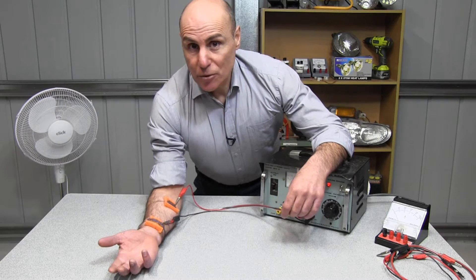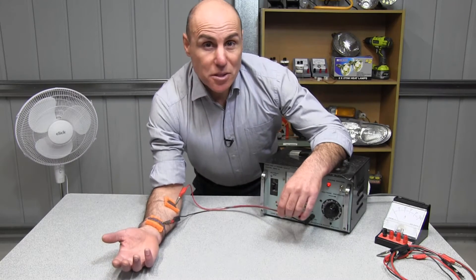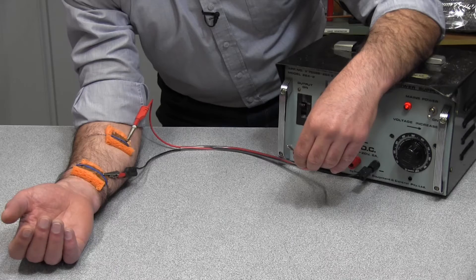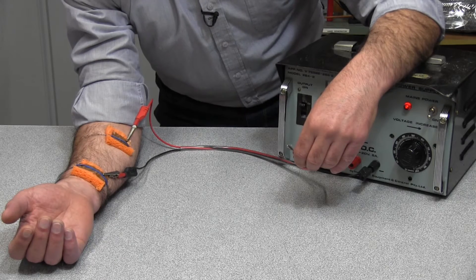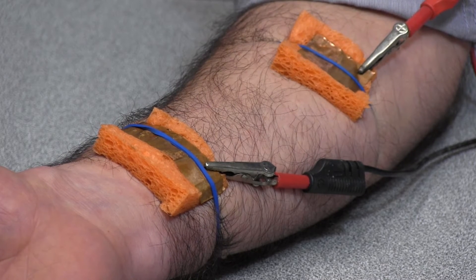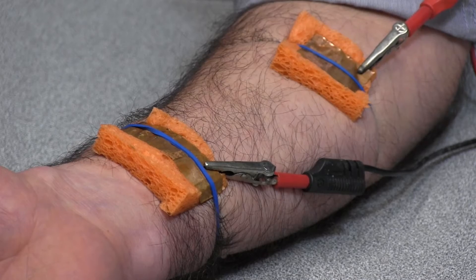To demonstrate an electric shock safely, I can pass a small amount of current through my forearm muscles. To make a really good connection, I placed two sponges on my forearm and then covered the sponges with copper plates. The sponges had been soaked in a special chemical that was a very good conductor.